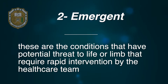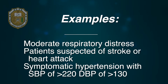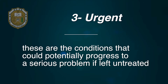Category 2 is the emergent level. These are conditions that have a potential threat to life or limb and require rapid intervention by the healthcare team. These include patients with moderate respiratory distress, patients suspected of stroke or heart attack, symptomatic hypertension with systolic blood pressure of more than 220 and diastolic blood pressure of more than 130, severe central pain in the chest, head, and abdomen, and signs and symptoms of infection in immunocompromised patients.